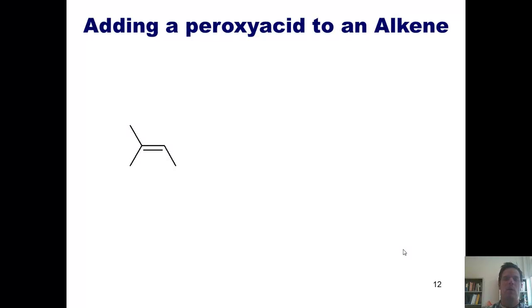The next reaction I want to teach you is adding a peroxyacid to an alkene. This is pretty simple and straightforward. If you have an alkene like the one I've shown here and you add this type of molecule, rather than having a methyl here you could have various different types of carbon hydrogen chains here.